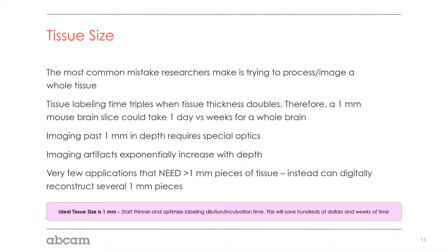If you go much thicker than one millimeter, labeling becomes a tremendous problem and takes a very long period of time, and you also need special optics and special microscopes to even image the tissue if you can label it. We practically suggest researchers pare that desire down to one-millimeter sections, which allows for much easier imaging, much quicker studies, and you can digitally reconstruct these sections back together later if your research question requires it — but most do not.